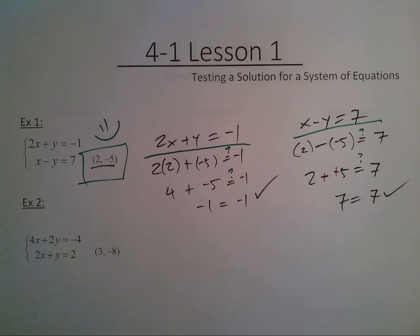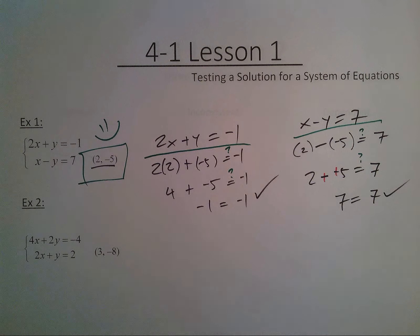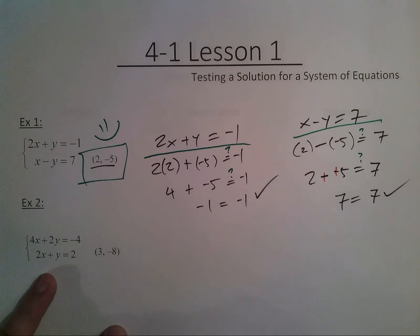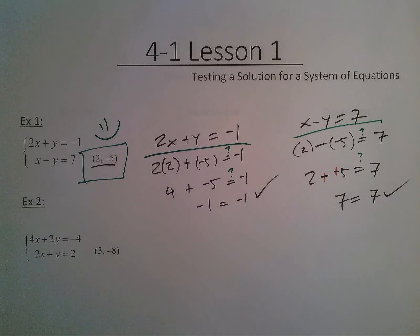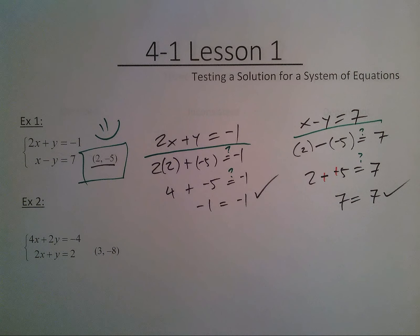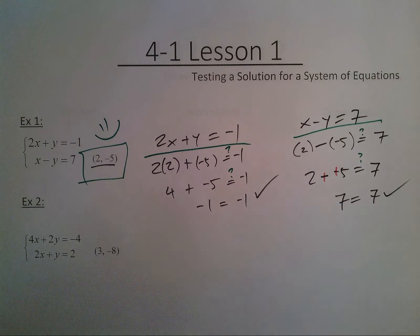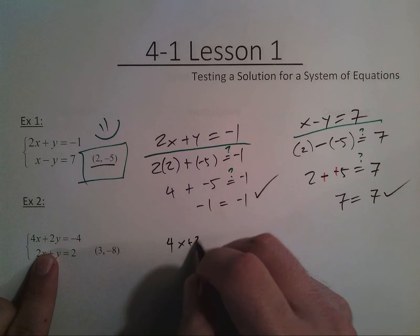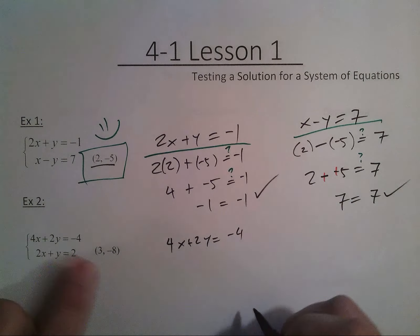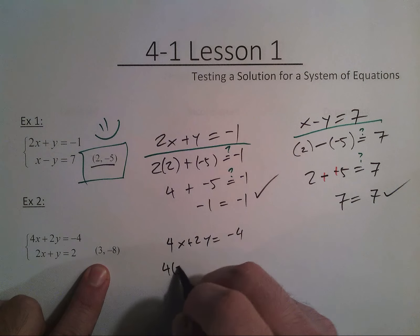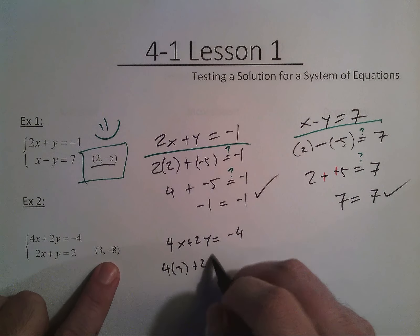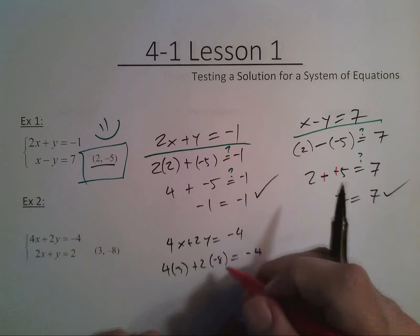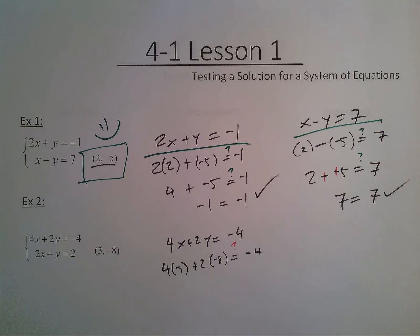Let's try it again. So I have the system 4x plus 2y equals negative 4 and 2x plus y equals 2. And I'm going to test out the point 3, negative 8. So I'm going to write out my equation. 4x plus 2y equals negative 4. I'm replacing the x with 3 and I'm replacing the y with negative 8. And I am testing, question mark above the equal sign, if this is true.